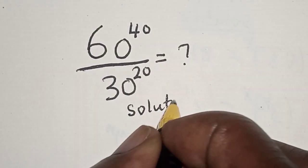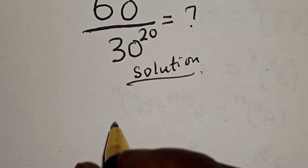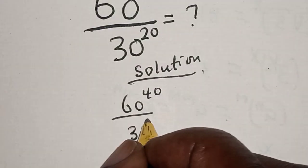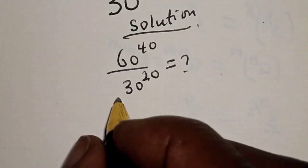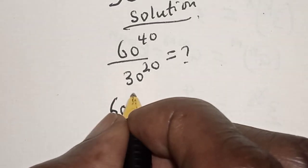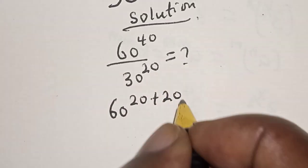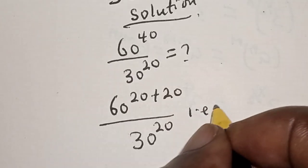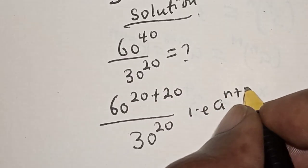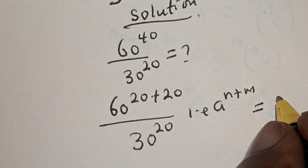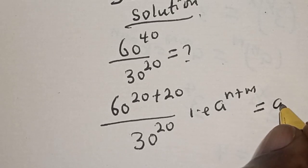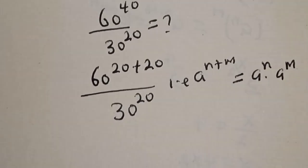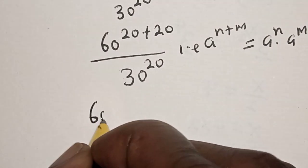Solution: we have 60 raised to power 40 divided by 30 raised to power 20. We rewrite the exponent as 60 raised to power 20 plus 20, divided by 30 raised to power 20. This uses the rule that a raised to power n plus m is equal to a raised to power n times a raised to power m.